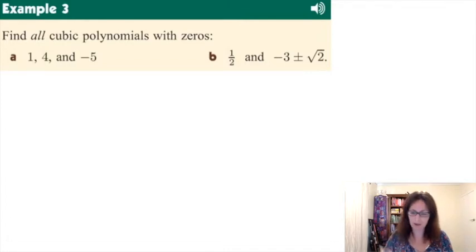So let's get into some examples that might be a little bit hazy up to this point, but let's try and put it into practice. Find all cubic polynomials with these zeros. So first of all, identify what they are as factors.